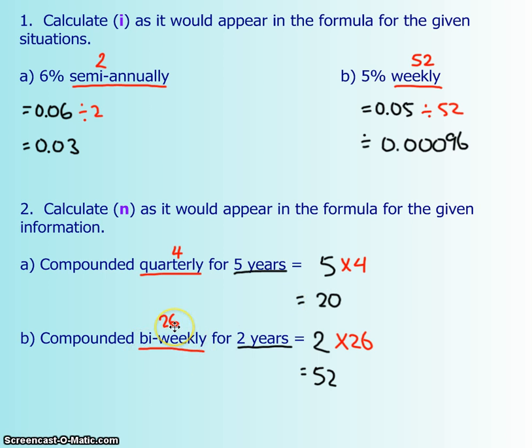For example, bi-weekly compounding is 26 times a year; for 2 years, that equals 52 interest payments.